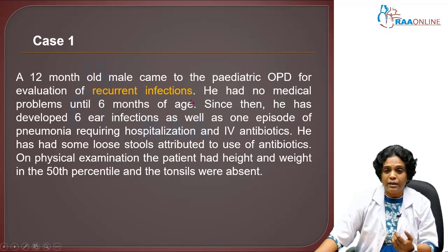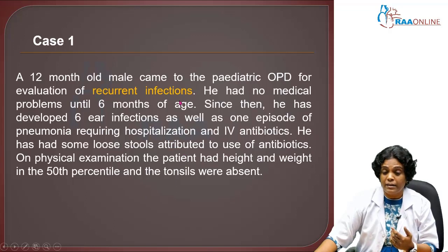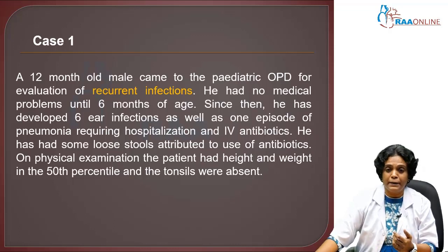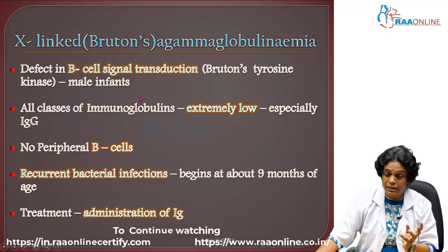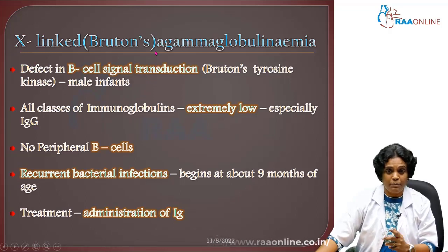In this case, the boy has recurrent infections, absent tonsils, required hospitalization due to repeated infection episodes, and needed IV antibiotics. This clearly indicates the boy is immunodeficient. It could be X-linked agammaglobulinemia, because the patient is male and the recurrent infections are due to a deficiency in immunoglobulins.